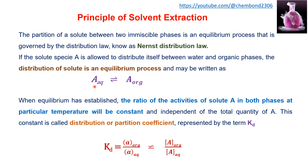A in the aqueous phase will distribute between aqueous and organic phases, and there will be an equilibrium process. When equilibrium is established, the ratio of activities or concentration of solute A in both phases at a particular temperature will be constant. This ratio — concentration of A in organic phase divided by concentration of A in aqueous phase — remains constant at a particular temperature for a particular system and is independent of the total quantity of A. This is known as the distribution or partition coefficient, represented by KD.